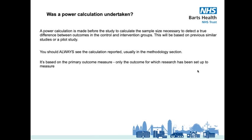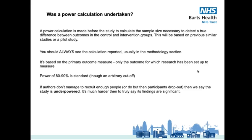Watch out for papers that initially set up to measure effectiveness as the primary outcome, but which then focus on secondary outcomes like side effects. That could be down to the research not proving a statistically valid link for the primary outcome. A power of 80% to 90% is the standard level, but this is an arbitrary cutoff — anything less is a bit of a worry. If the authors don't manage to recruit enough people, or lots of participants drop out, we say that the study is underpowered and it's much harder to truly say its findings are significant.